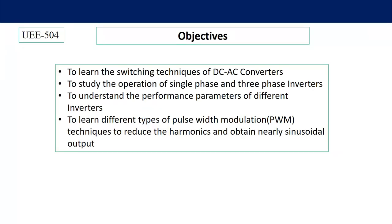The objective of this chapter is to learn the switching techniques of DC to AC converters — how DC is converted to AC — and to study the operation of single-phase and three-phase inverters, which are the two most popular inverters. We will also understand the performance parameters of different inverters, meaning the harmonics of the AC output voltage, the magnitude of the fundamental component, the quality of the current waveform, and RMS output voltage.